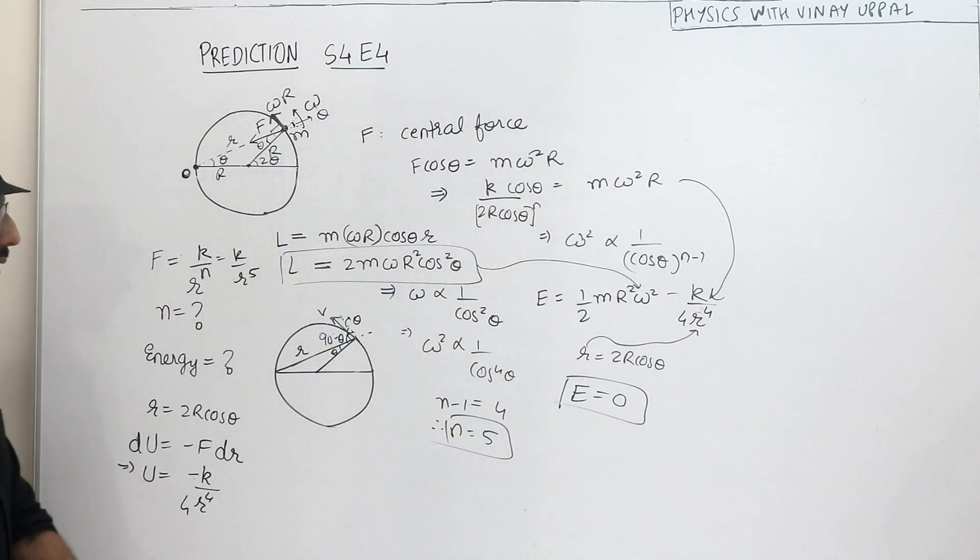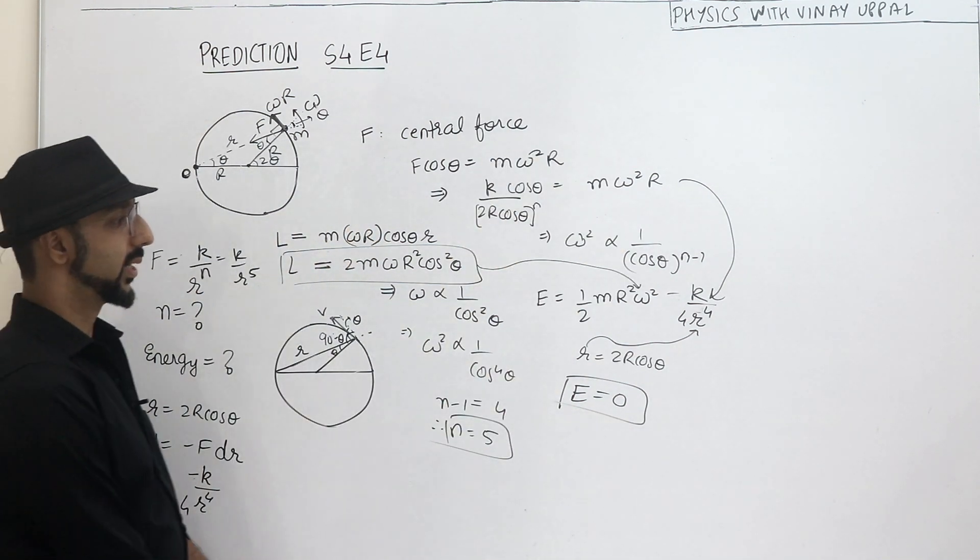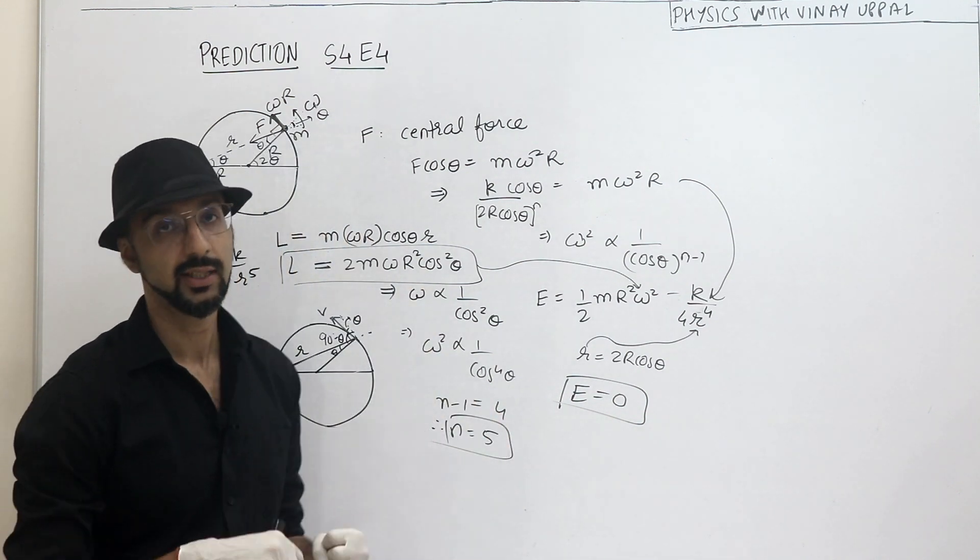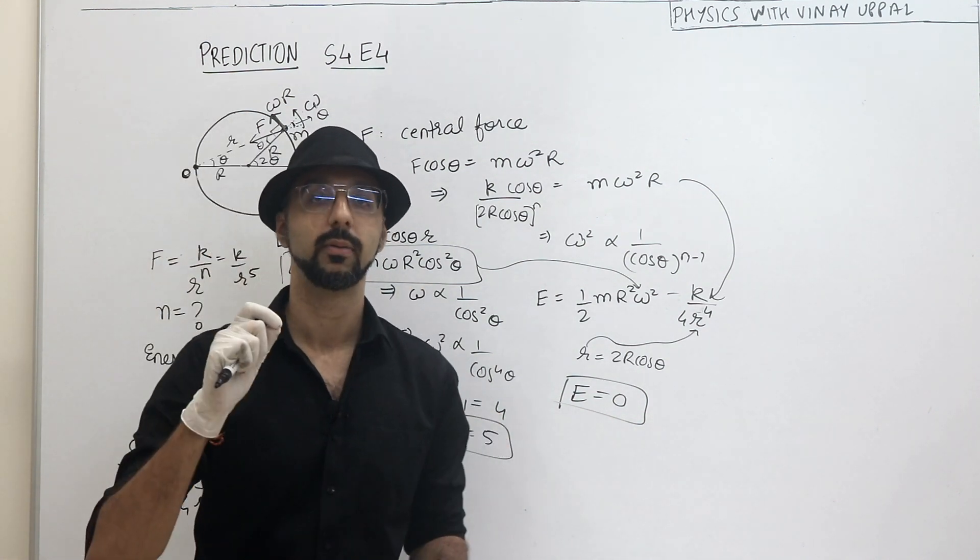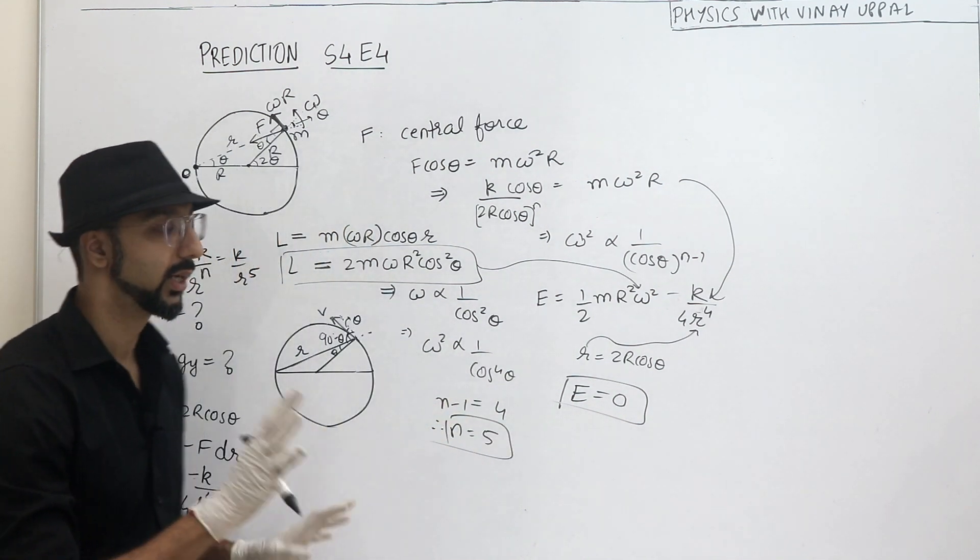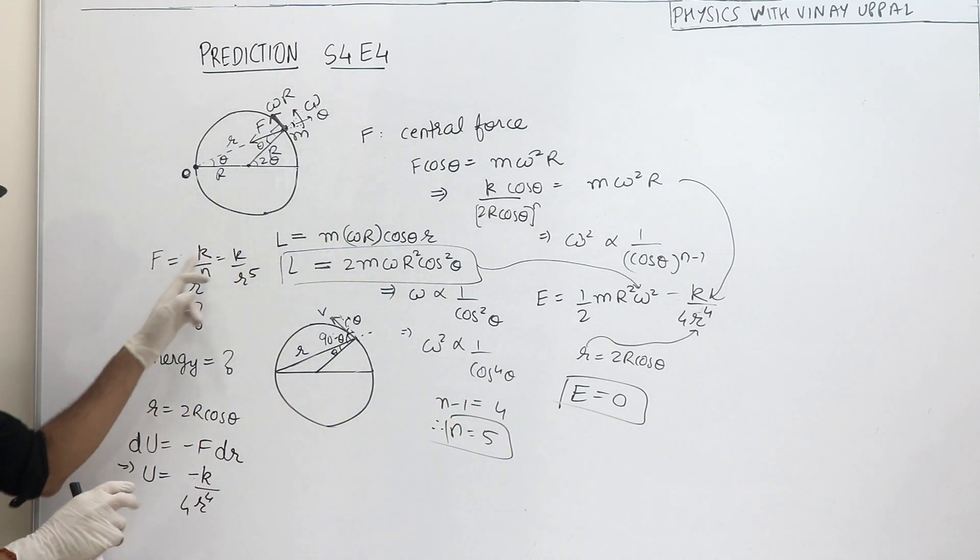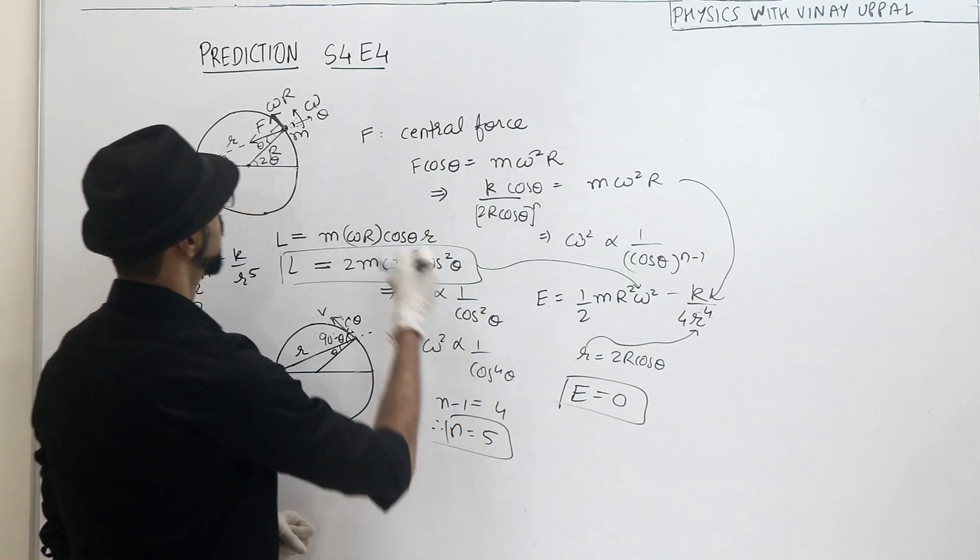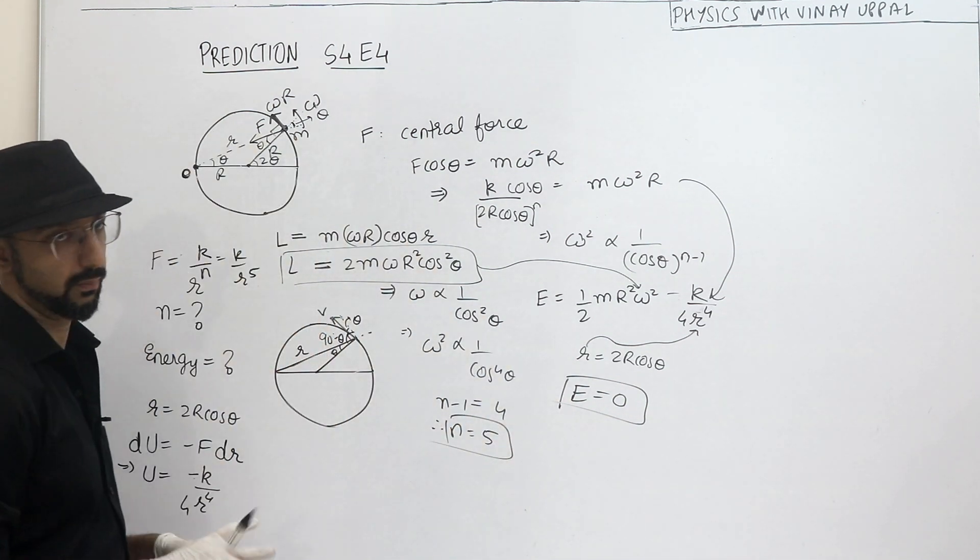There you will substitute omega here and k value from this equation. And you will get, I am leaving the calculation up to you, you will get the total energy as 0. Alright, don't think that 0 energy will be an unbound orbit like in gravitation. That would be a parabolic orbit because force was inversely proportional to square of r. But here it is inversely proportional to 5th power of r. So for energy 0, it is performing a circular orbit.